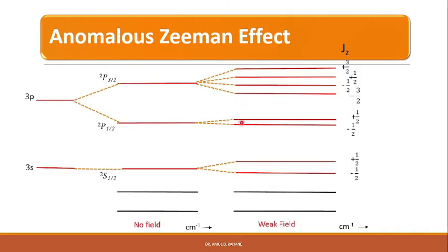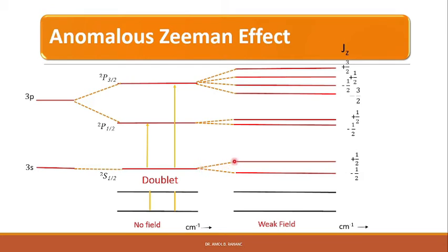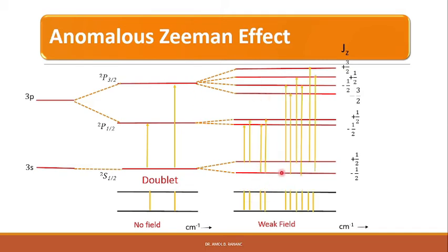In the case of the anomalous Zeeman effect for sodium D lines, the transitions are between 2S₁/₂ and 2P₁/₂ and 2P₃/₂ levels, giving a doublet structure in the absence of an external magnetic field. When a weak magnetic field is applied, each spectral line splits into different energy levels for different JZ values, since L and S couple to form total angular momentum J with (2J+1) components. Transitions between these levels give rise to 10 different spectral lines — the anomalous Zeeman effect.